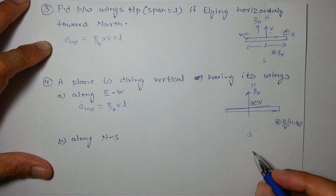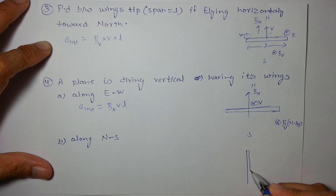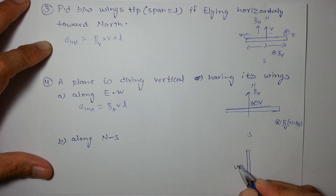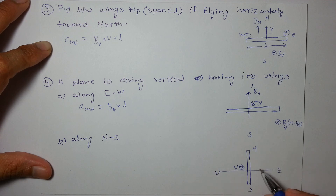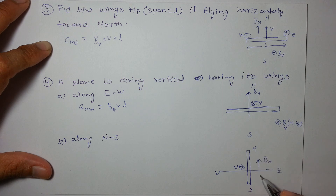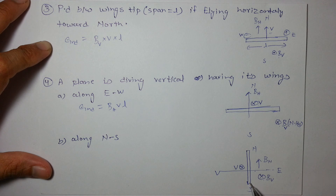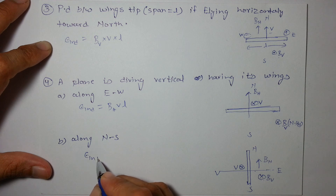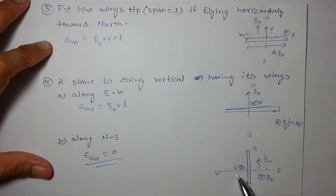If the wings are along the north-south direction and the plane is diving vertically, then the velocity is downward, BV is parallel to V, and BH is parallel to the length of the wings. Both components fail to produce any EMF. So EMF induced in this case will be zero — neither BH nor BV will be able to produce any EMF across the wings.